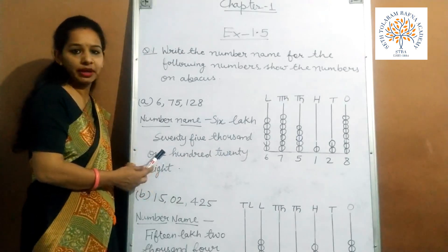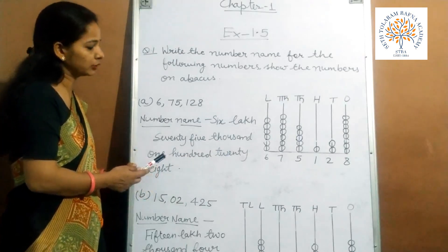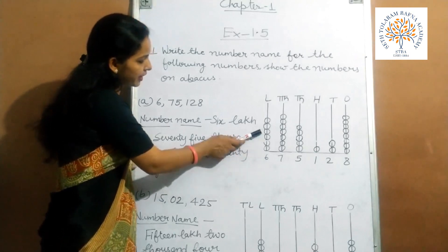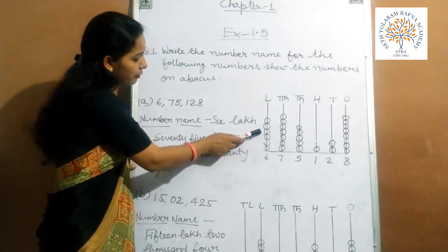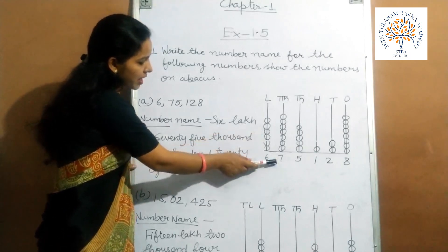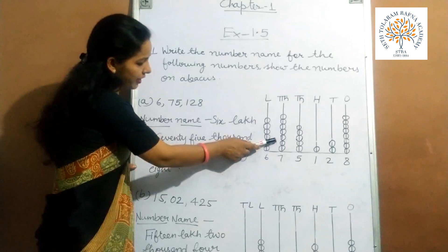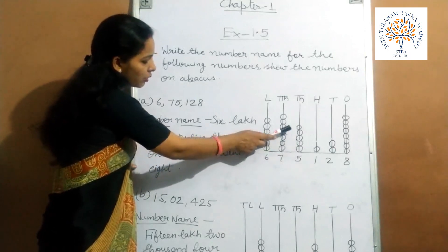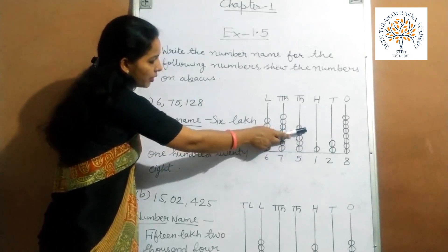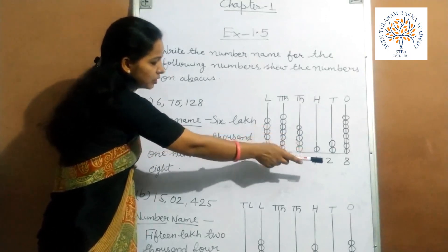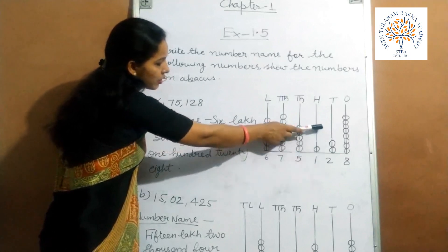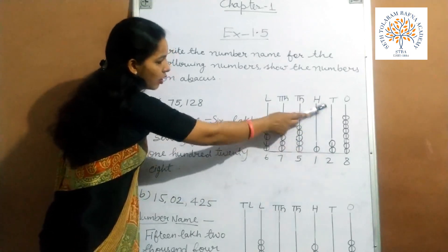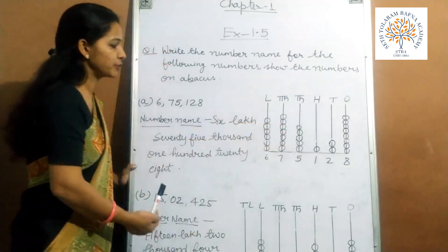So we show the same number on abacus also. We draw 6 beads on lakh place, 7 beads on 10,000 place, 5 beads on 1000 place, 1 bead on 100 place, 2 beads on 10s place, and 8 beads on 1s place.